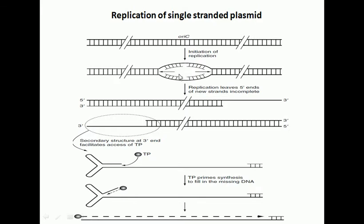In this case you can see the replication bubble and the fork movement is done in both the directions and then finally replication is done. But in case of the single-stranded DNA, the replication scheme is slightly different.